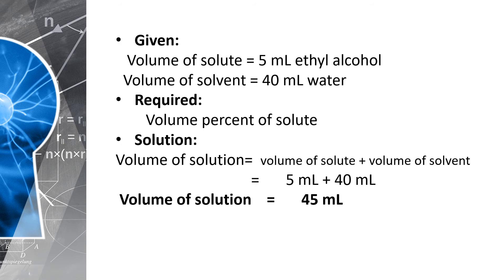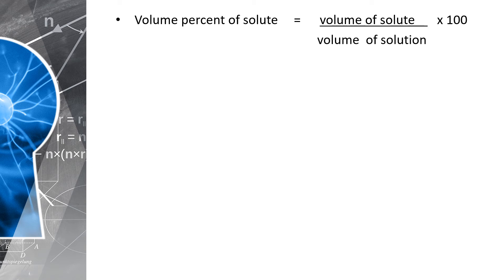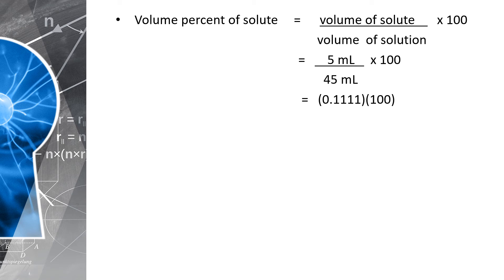Continuing the computation: volume percent of solute equals volume of solute divided by volume of solution times 100. Substituting: 5 mL divided by 45 mL times 100. Using long division or a calculator, 5 divided by 45 equals 0.1111, times 100 gives 11.11%. That is the answer for the volume percent of solute.